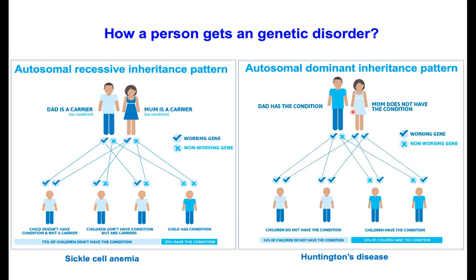In autosomal dominant inheritance, the dad may carry one allele mutation and the mom may carry both allele mutations. The chances of the offspring getting the disease are 50%. Since it is autosomal dominant, even carrying one allele mutation leads to the disease condition or disease phenotype. The best example for this is Huntington's disease.